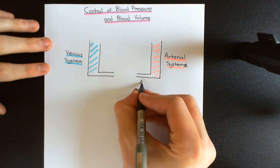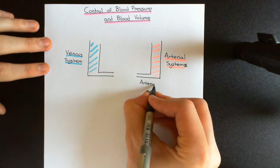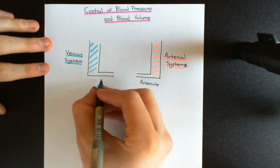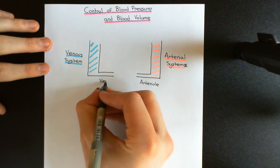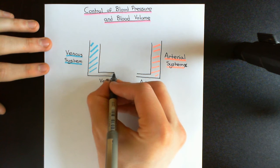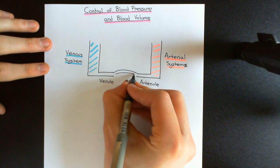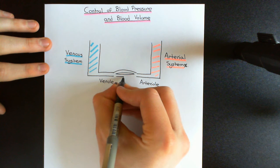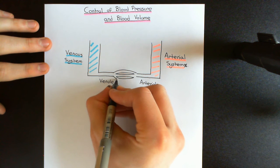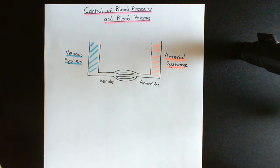On the venous side here we have a venule. This is representing a little arteriole — a fairly small little blood vessel, barely bigger than capillaries. And here we have a venule. In between them, of course, we'll have the capillary bed. The arteriole splits into capillaries and then the capillaries reconverge to form the venule.